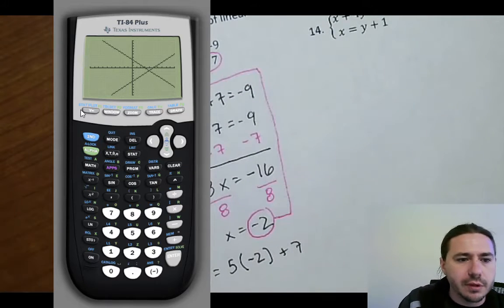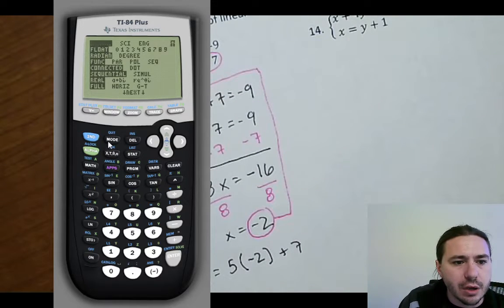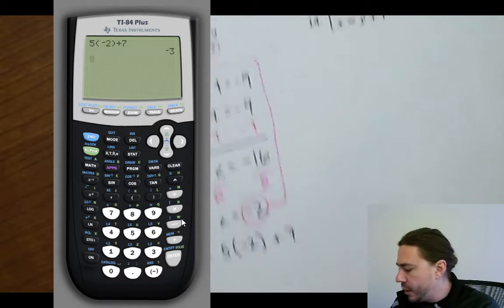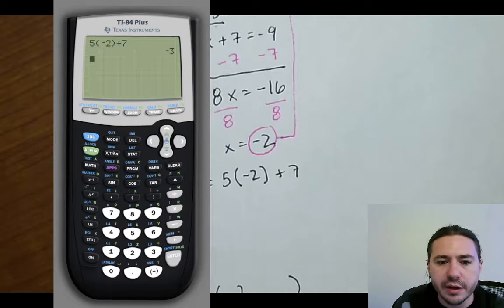We got, oh, I thought I cleared that out. There we go. So 5 times negative 2 plus 7. Yep, in fact, negative 3. So we do get negative 3 as our y-coordinate there.